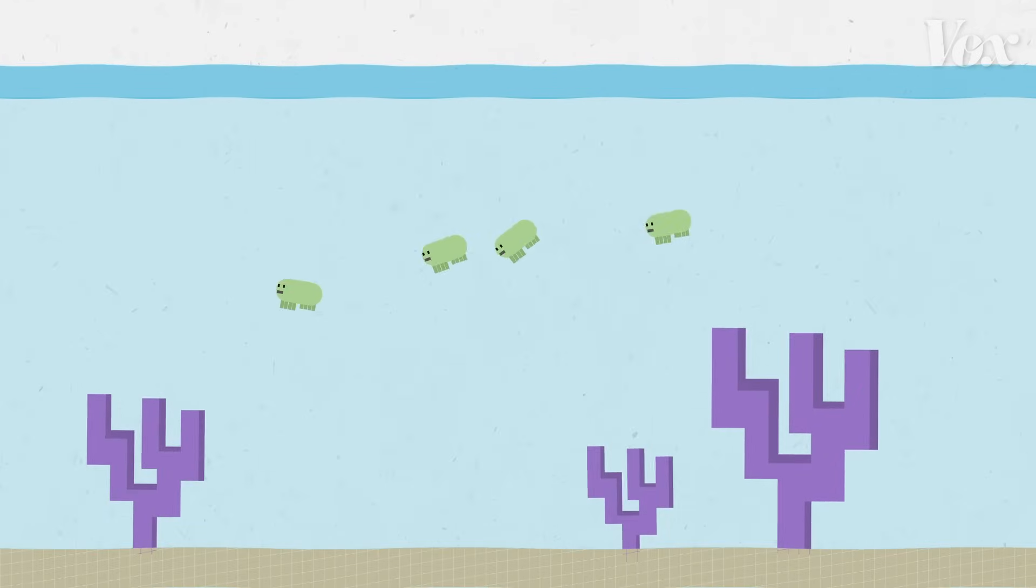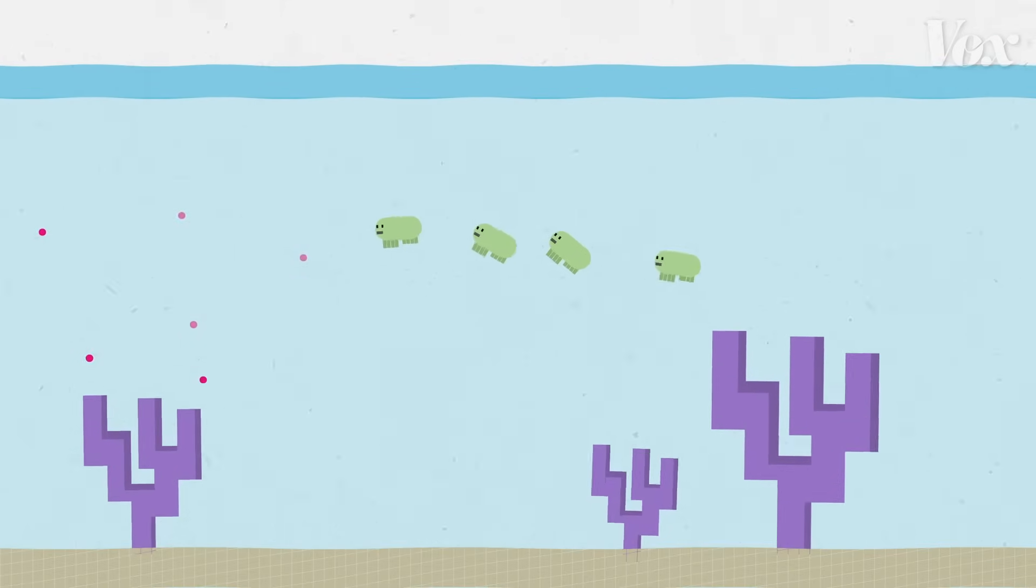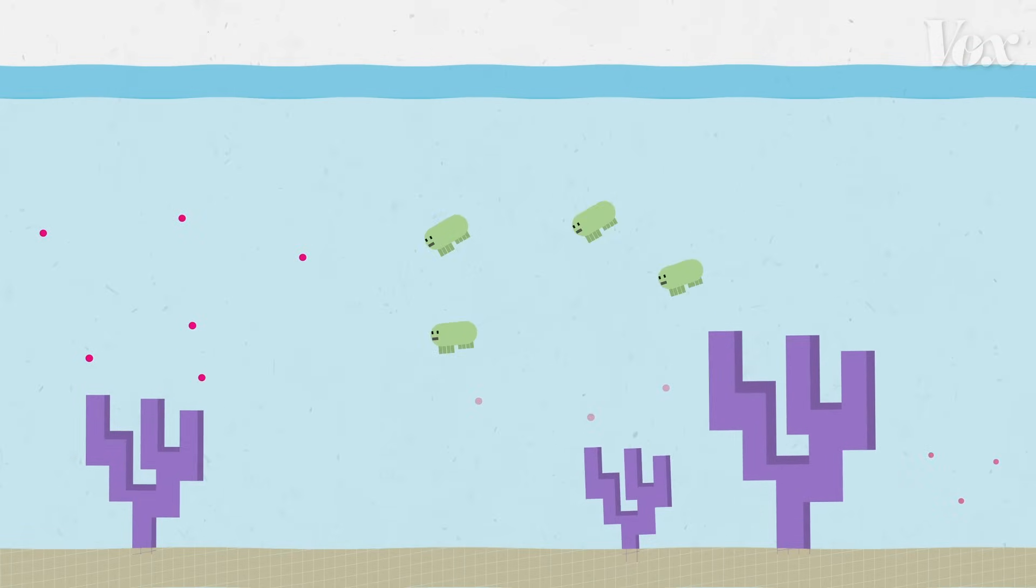Meanwhile, a similar thing happens in the ocean. Coral and plankton need carbon from the water to survive. Luckily, the ocean has carbon because it absorbs some from the atmosphere.